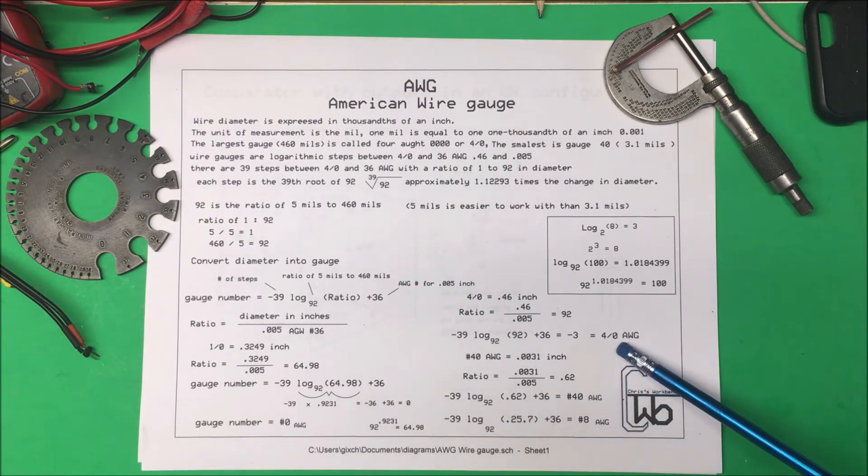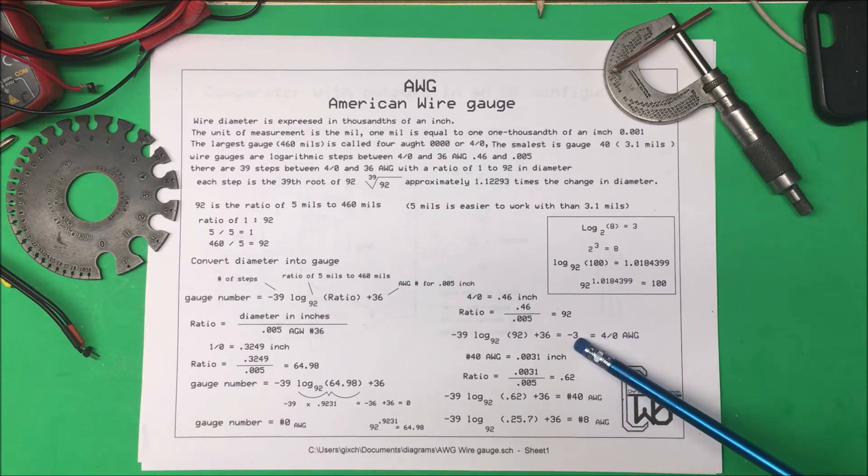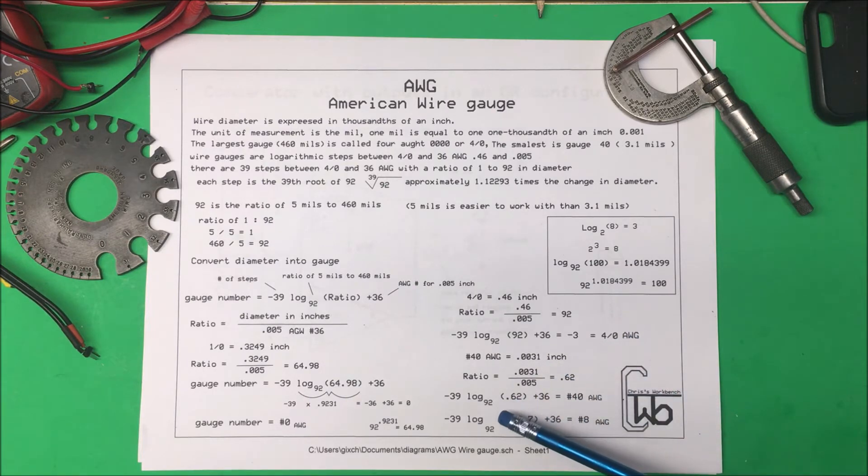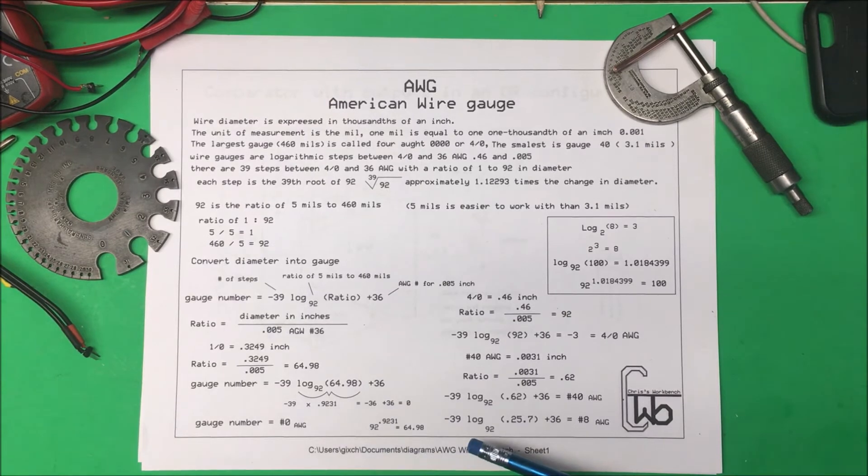So our 4-0 is minus 3 and our 3-0 would be minus 2 and 2-0 would be minus 1, and 1-0 is 0.